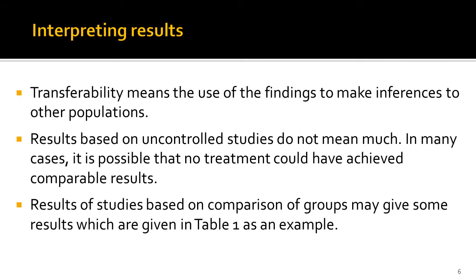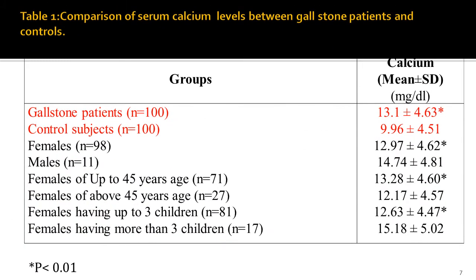Transferability means that by using your findings and interpretation, other researchers can apply those to other populations. The findings of uncontrolled studies, like genetic studies, will not be transferable or dependable. Whereas results of studies based on comparison groups — as an example, the same table from the data processing lecture is taken here.